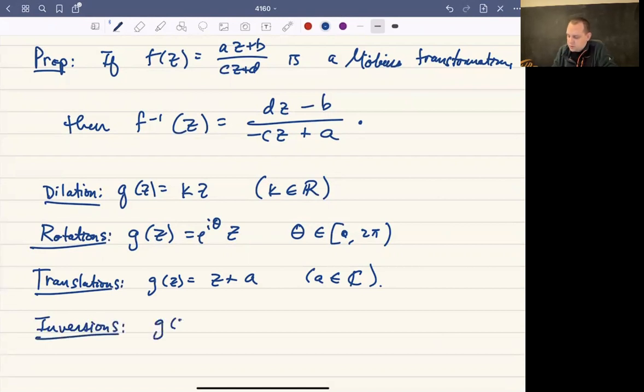An inversion is a function where you have 1/z. So it turns out that these are all of the functions that are necessary. These are all the building blocks of linear fractional transformations and, in particular, Mobius transformations.